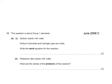This question is about Group 1 elements. Sodium reacts with water. Sodium hydroxide and hydrogen are made. What's the word equation for this reaction? Well, we've got sodium + water → sodium hydroxide + hydrogen.